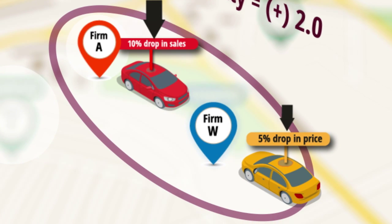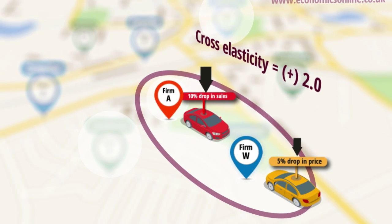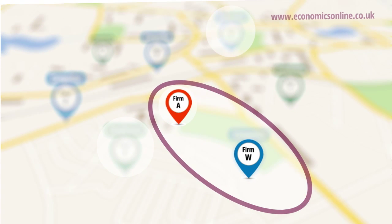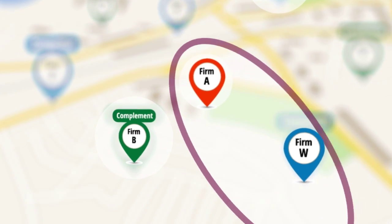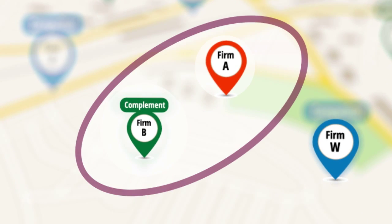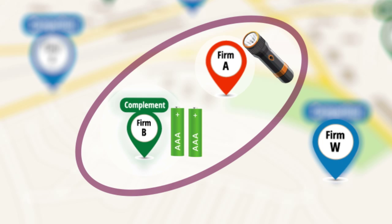In markets with few competitors, cross-elasticity between rivals is likely to be very high. In the case of complements, the degree of cross-elasticity indicates the extent to which the goods are in joint demand. Goods are in joint demand when the purchase and use of one good requires that another good is also purchased, such as a torch requiring a battery. In this case, a firm is vulnerable to a price rise of a complementary good — if batteries rise in price, fewer torches may be sold.